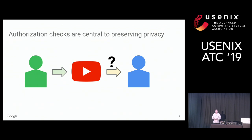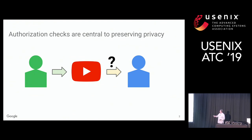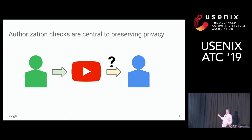Determining whether online users have permission to access digital objects is central to preserving privacy online. For example, user Alice posts a video on a video sharing service such as YouTube, and the question arises: can another user, in this case Bob, access the video?